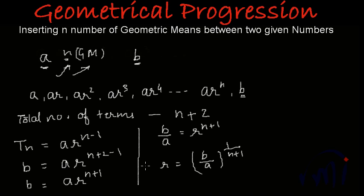So r will actually be n plus first root of b by a and now we can always write the pattern in this form and the first mean will be ar and then after that we can find n number of means by using this pattern.